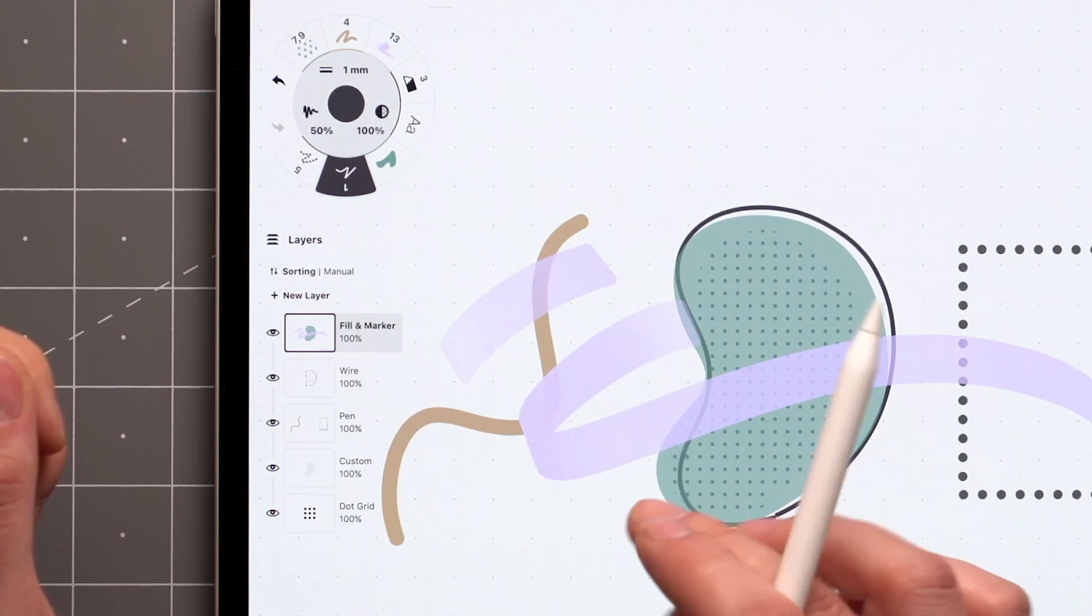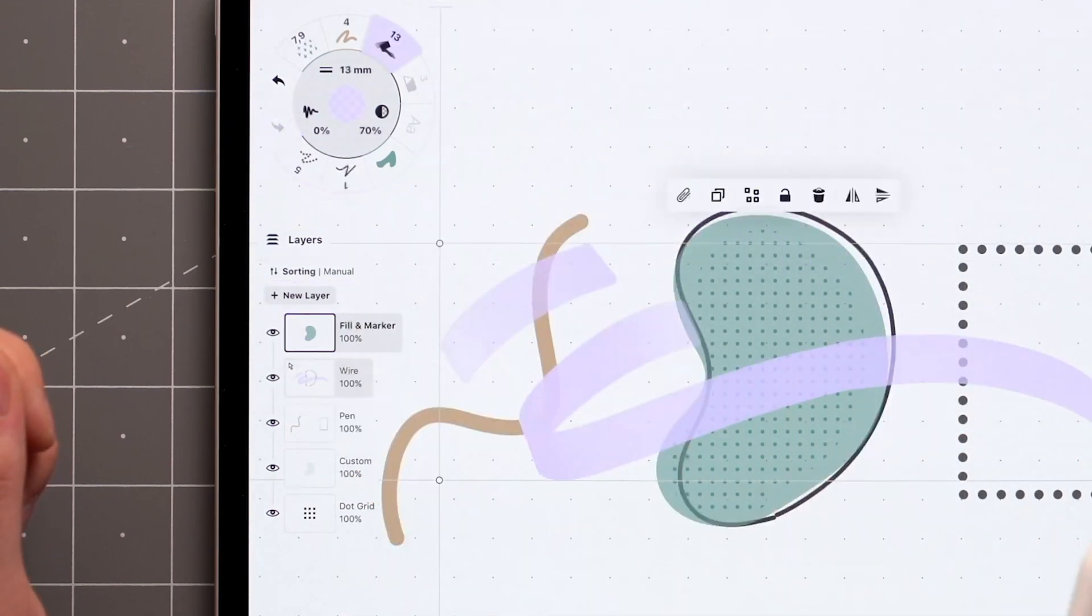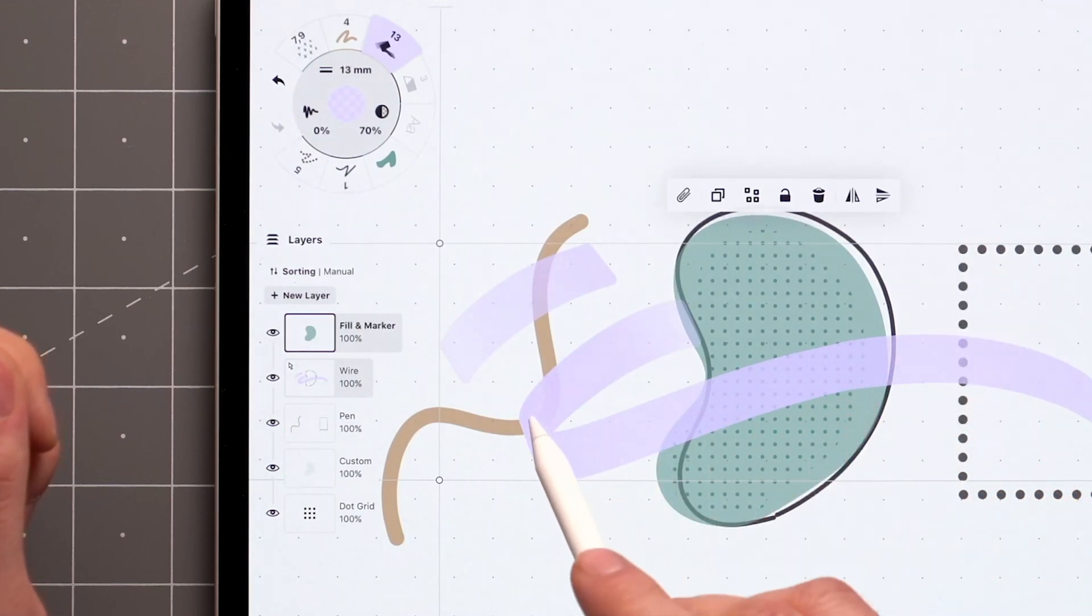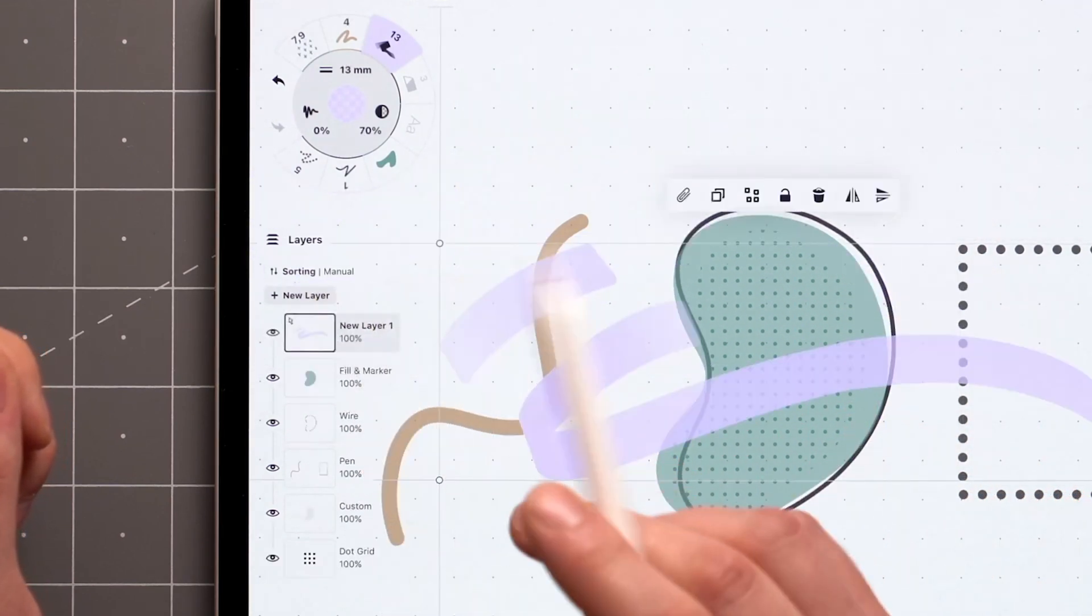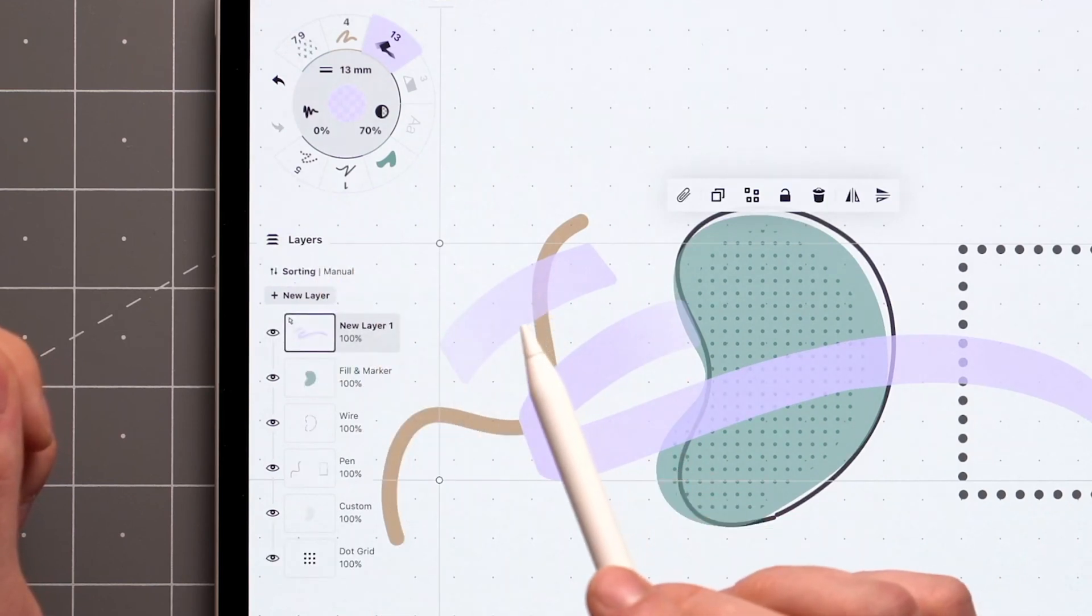In case you need to move items to specific layers, just make the selection and drag it into the desired layer. If you want to create a new layer for your selection, you can drop it on the New Layer button directly, or tap the New Layer button while the selection is active.